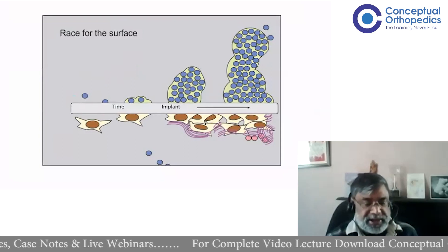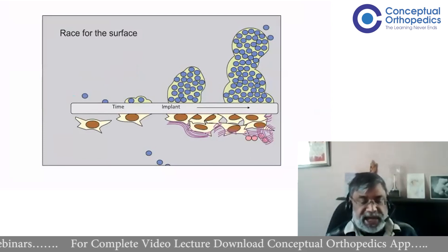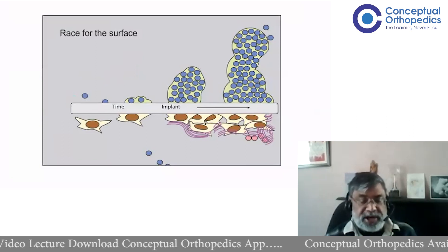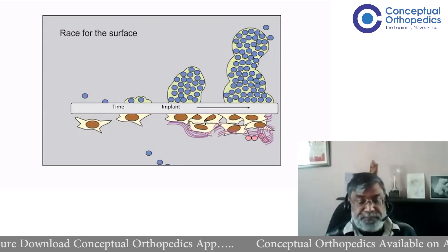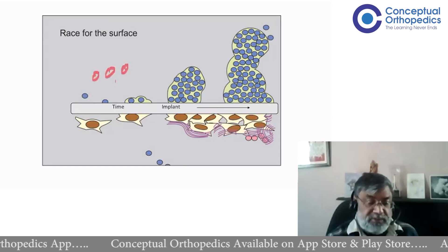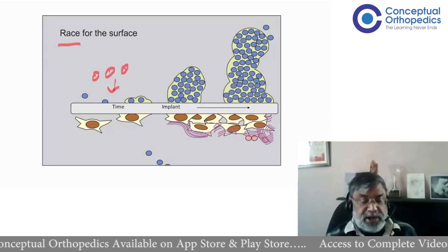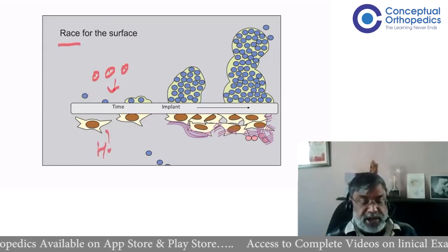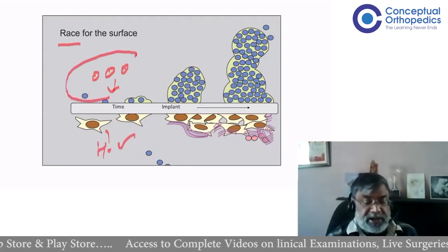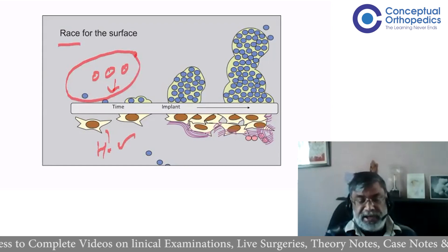There is also a race between the bacteria and the host tissue. If the number of bacteria is low, the host tissue can easily attach to the implant — initially with fibrocytes and then, if there is osseointegration, with bone forming a protective layer on the implant. But if the bacteria are many in number, they will win the race. So it depends on whether the bacteria or your own host tissue wins the race for the surface. Our aim is for the host tissue to win by decreasing the number of bacteria so they don't form a colony on the implant — that is the aim of infection prevention.